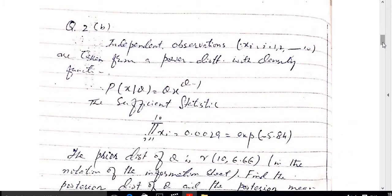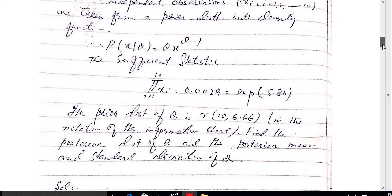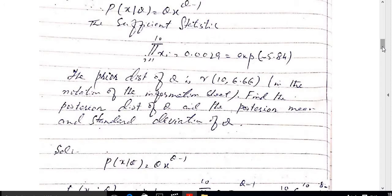For part B of the question: independent observations x_1, x_2, ..., x_n are taken from a power distribution with density function p(x|theta) = theta · x^(theta−1). The sufficient statistic is the product of x_i for i = 1 to 10, equal to 0.0029, which equals e^(−5.84). The prior distribution of theta is a gamma distribution with parameters alpha = 10 and beta = 6.66. We need to find the posterior distribution, posterior mean, and standard deviation of theta.